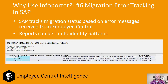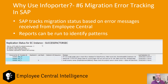Number six: InfoPorter does a good job of error tracking directly within SAP. Every time you run the process it records where errors occurred, and you can look those up by employee or by object type — for example, all people with job information record errors. It's much easier to troubleshoot right there in SAP rather than having to download error logs from a SuccessFactors job scheduler.